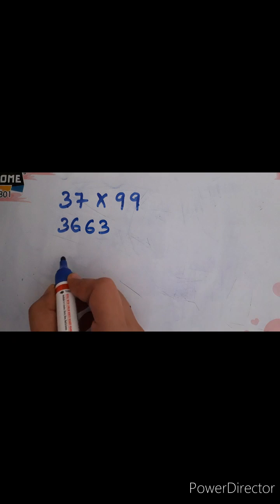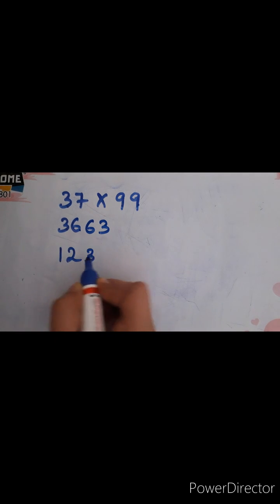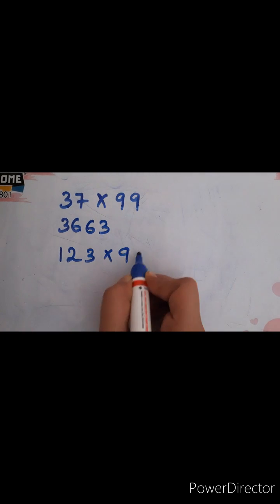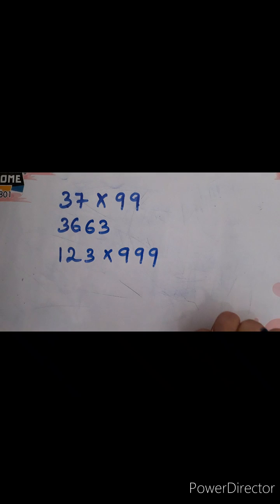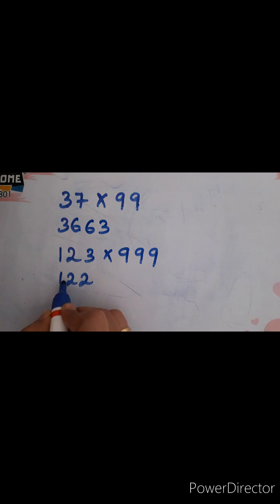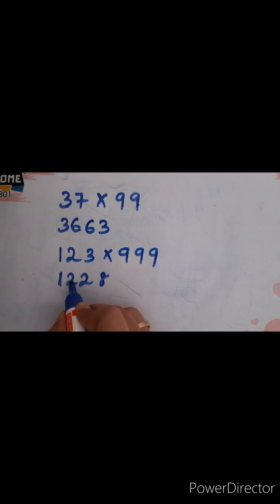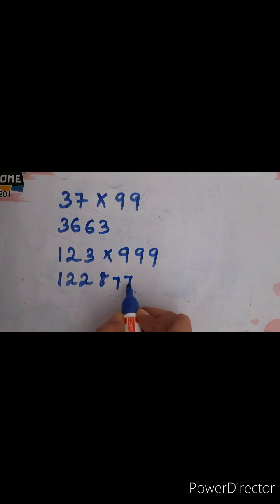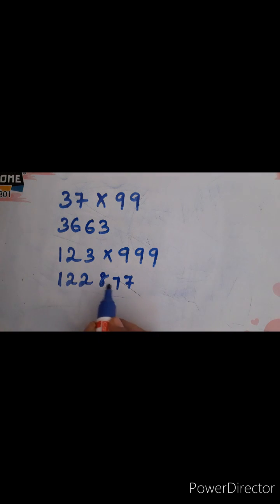One more example: 123 into 999. The number preceding 123 is 122. Then: 1 plus what gives 9? That is 8. 2 plus what gives 9? That is 7. 2 plus what gives 9? That is 7. So the answer is 122877.